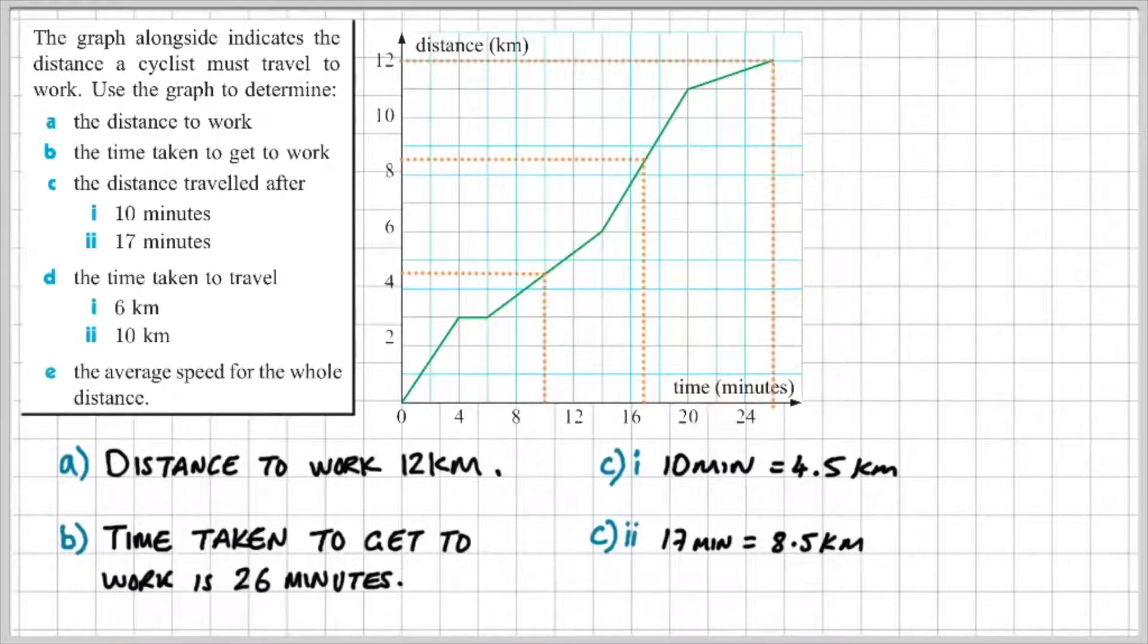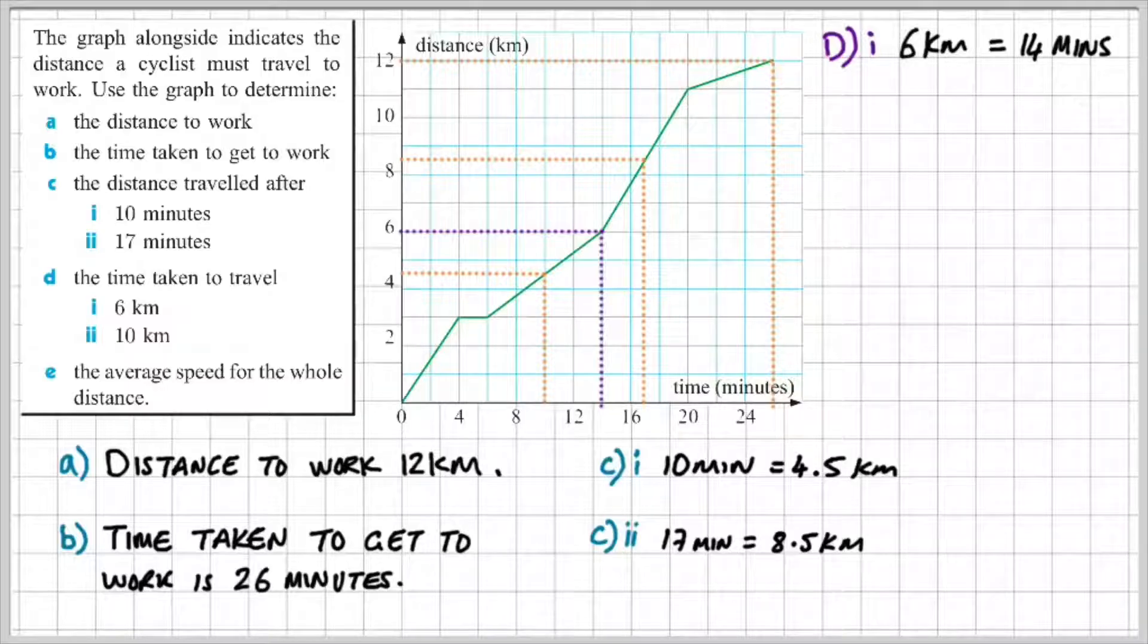Part D is basically the opposite. It's asking the time taken to travel 6 kilometres and 10 kilometres. After 6 kilometres, we can read across to find out how much time is taken. So in this case, we can say travelling 6 kilometres will take 14 minutes. And likewise, after 10 kilometres, you can see that we've travelled a total of 19 minutes.